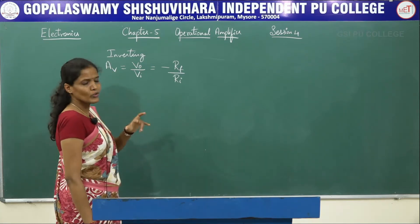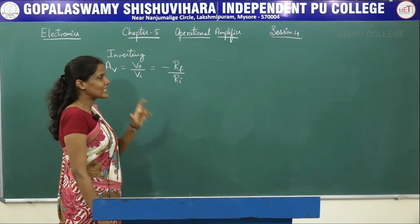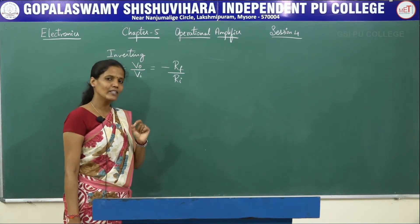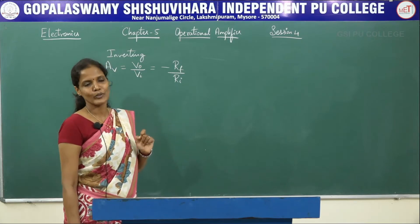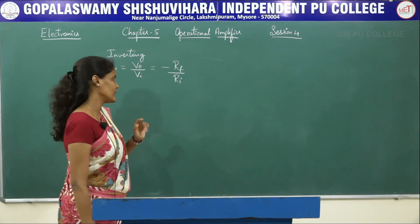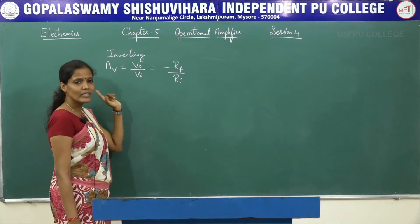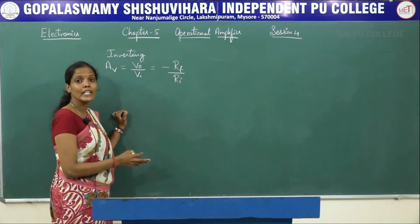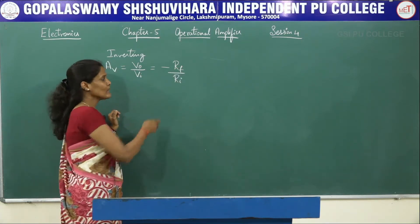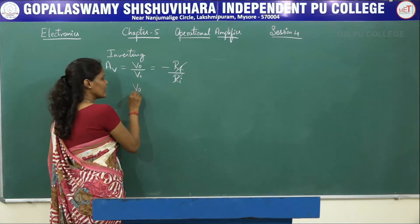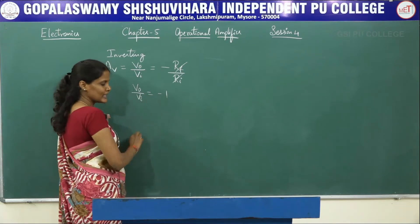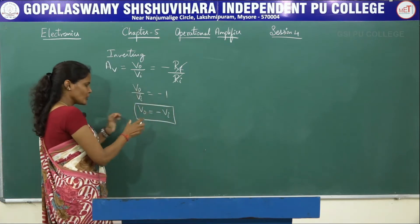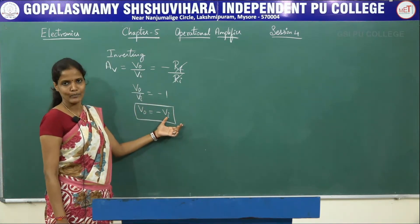If the source voltage is connected to the inverting input terminal, that amplifier will be called as the inverting operational amplifier. If the input voltage is given to the non-inverting input terminal of the op-amp, that circuit will be called as the non-inverting operational amplifier. This is the voltage gain formula. If Rf and Ri values are equal, they get cancelled, and we are left with V0/Vi = -1, or V0 = -Vi. The output is just the inversion of the input signal.